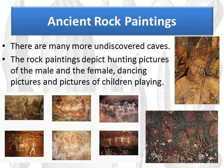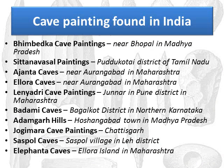There are many more undiscovered caves. The rock paintings depict hunting, pictures of male and female dancing, and pictures of children playing. You can find the Bhimbetka cave paintings near Bhopal in Madhya Pradesh, Sithanvasal paintings in Pudukkottai district of Tamil Nadu, and Ajanta caves near Aurangabad in Maharashtra. There you can also find the Ellora caves.